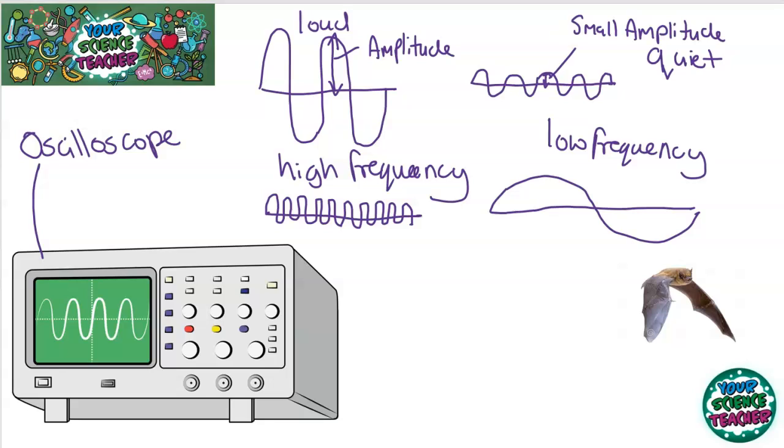And it bounces off the prey and then it detects it with really sensitive ears that can pick up high frequency sound. Dogs are also the same. Dogs can hear really high frequency. That's why we can use dog whistles in the park that people cannot hear.